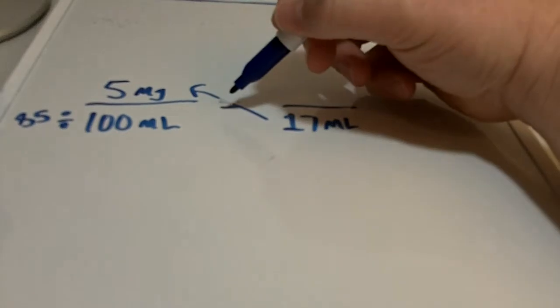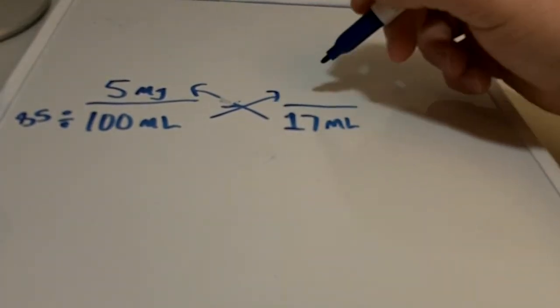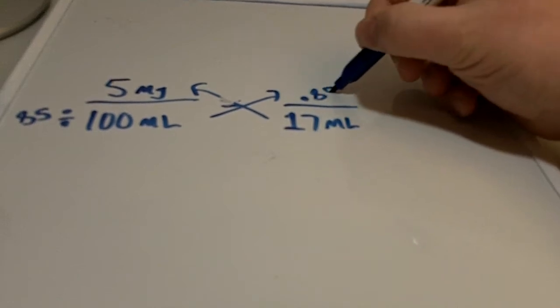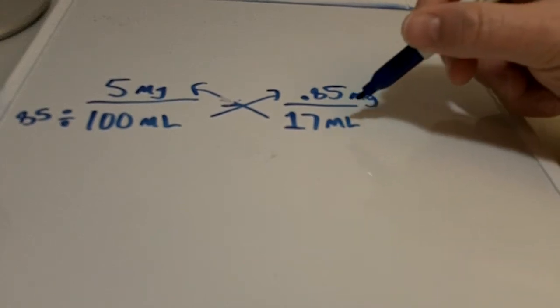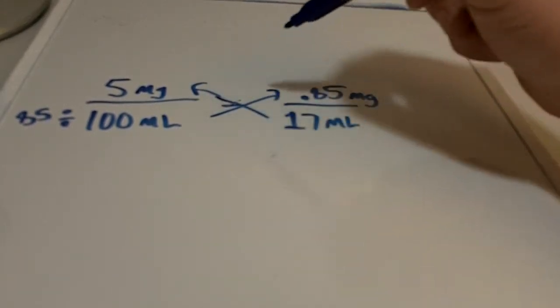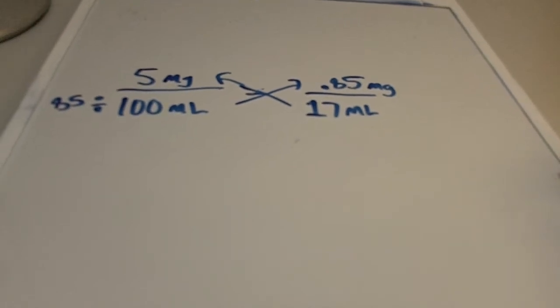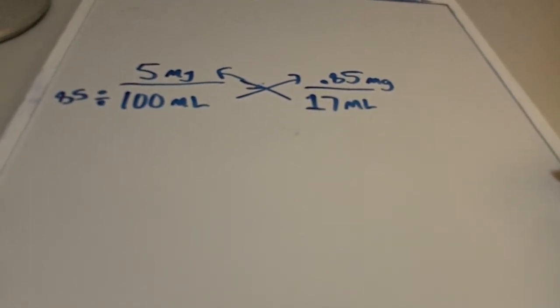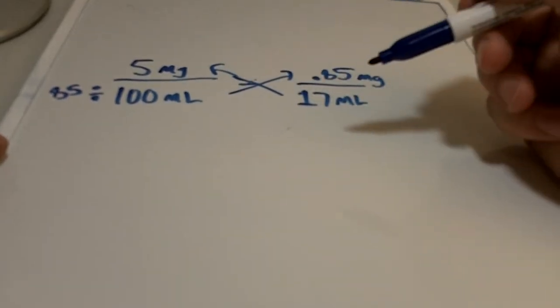The way you do that is you multiply this way, these two together, which gives you 85, and then you divide 85 by 100, and then that gives you what was the unknown up here, which in this case would be 0.85. So there's 0.85 milligrams in 17 milliliters. And the reason this works, it's actually a shortcut to cross-multiplying. Cross-multiplying is the real algebra method. This is just a nice compact shortcut.